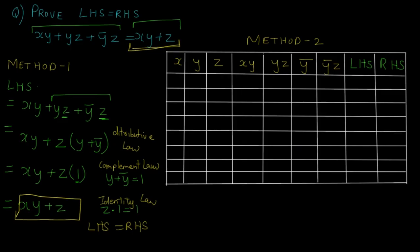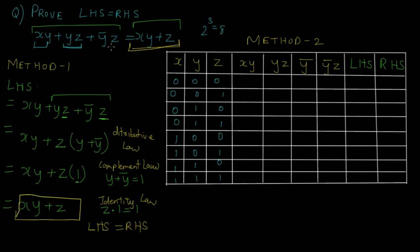Now let's see how Method 2 works. In Method 2 we use truth tables to prove LHS is equal to RHS. Since there are 3 variables, the number of input variations is 2 raised to 3, which equals 8, so I'll fill out the input values. For the LHS we need: X·Y, Y·Z, and Y complement·Z — for that we first need Y complement in its own column. For the RHS part we just need the X·Y OR Z component.